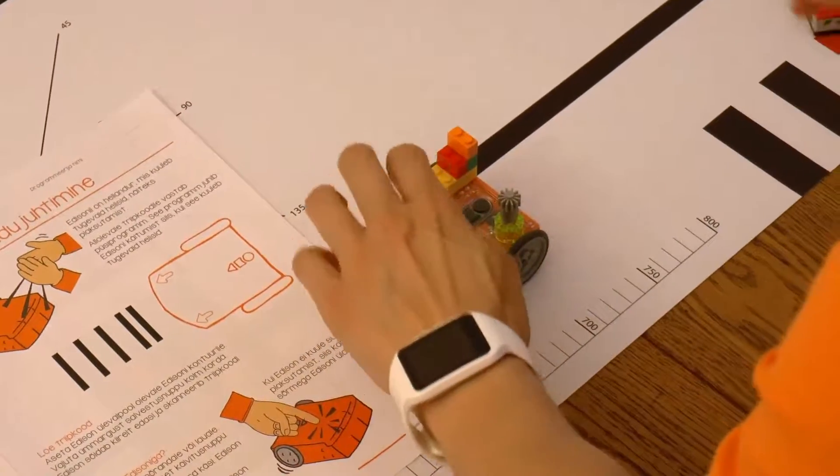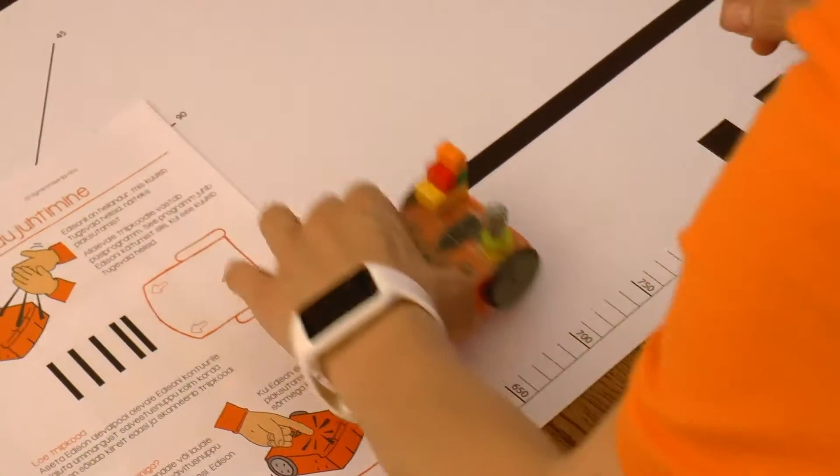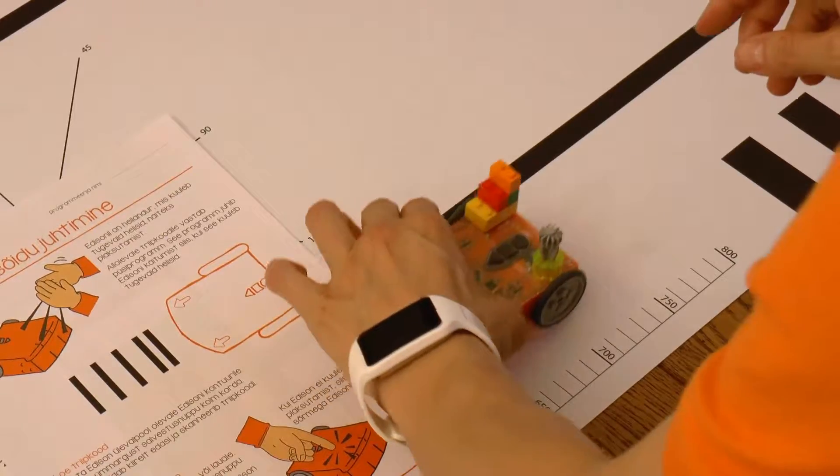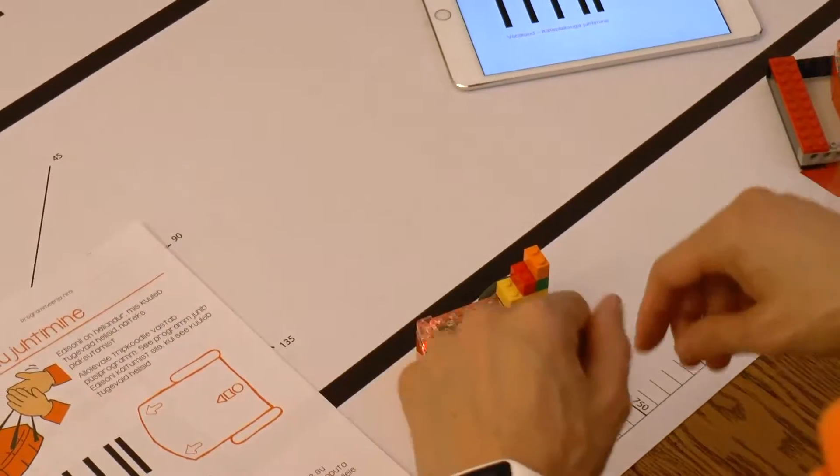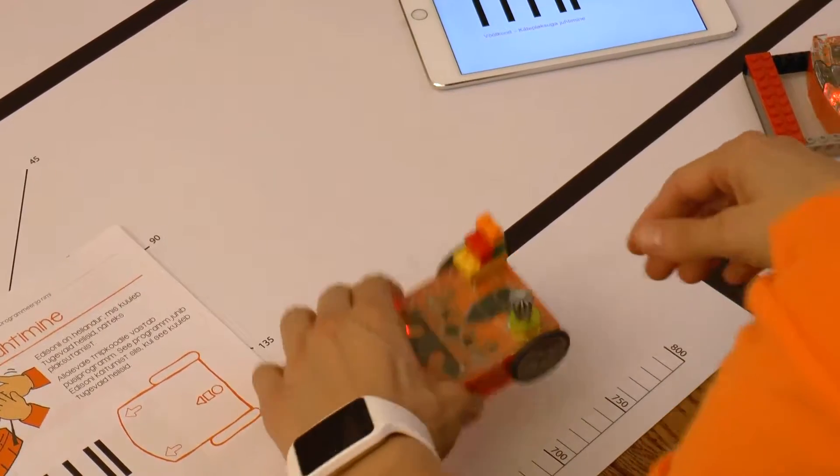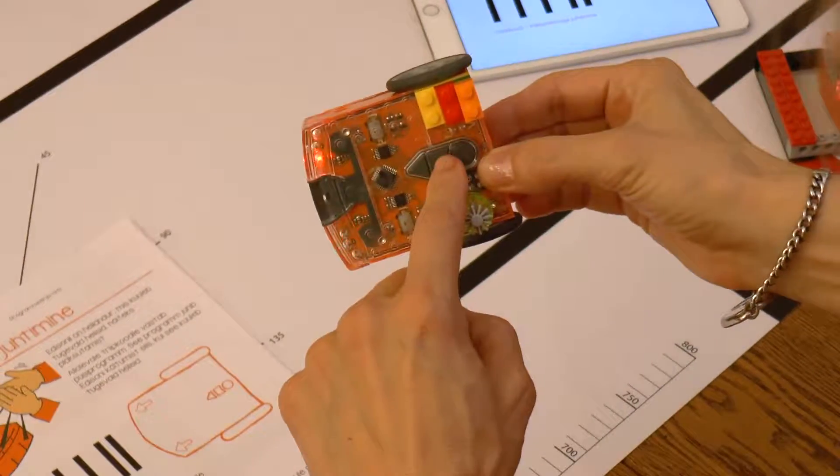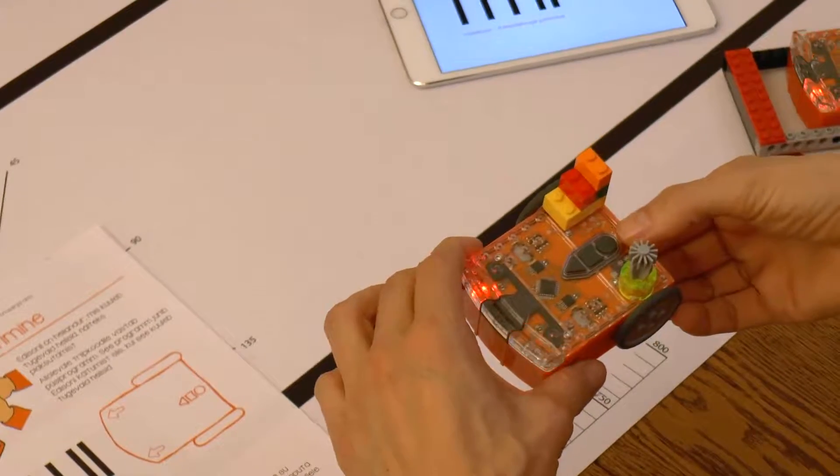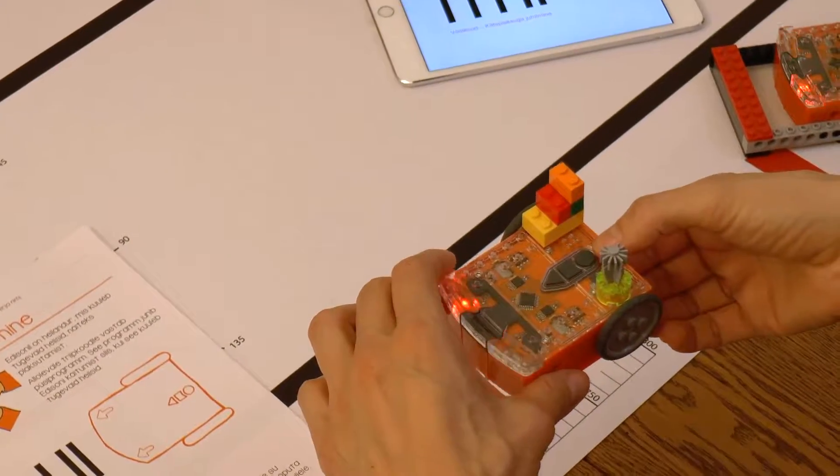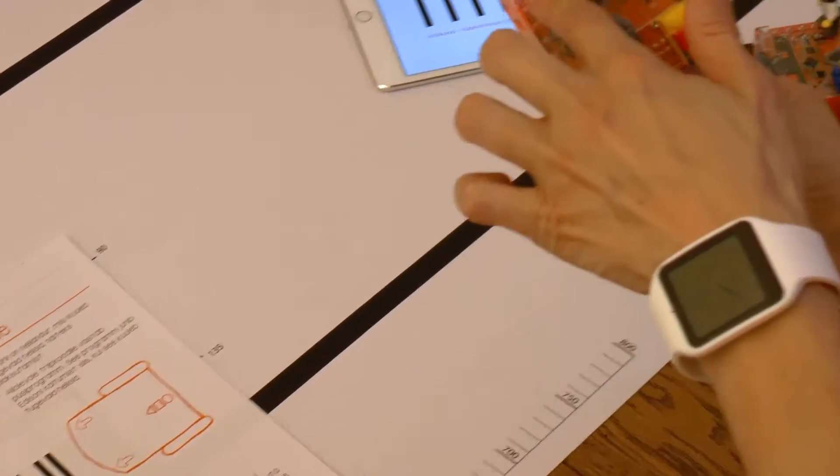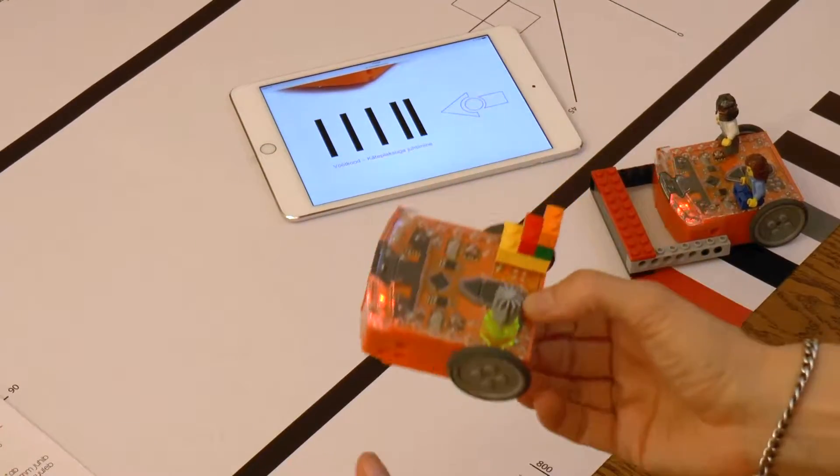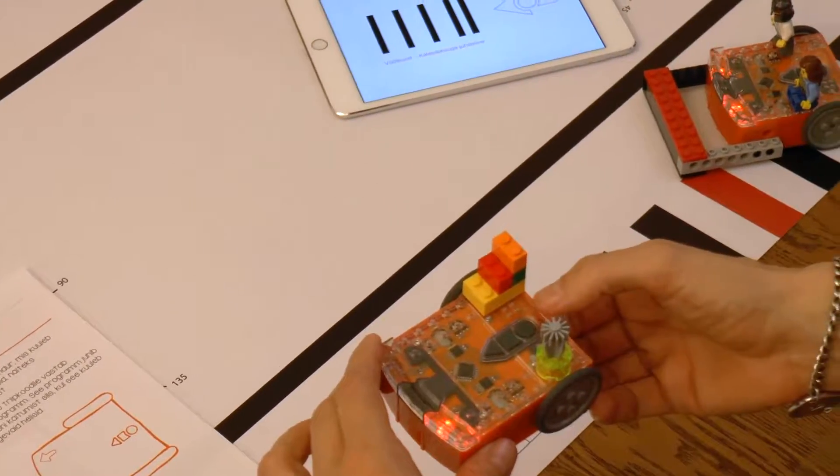If Edison is turned off, turn it on and make sure the red LEDs are flashing. If Edison is turned on but red LEDs aren't flashing, then it's possible a program is already running. In this case, press the square button to end the running program and the LED should then start flashing. If that doesn't help, turn the robot off and on again.